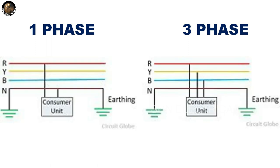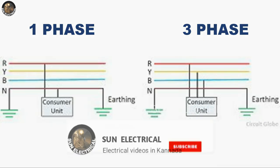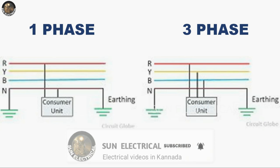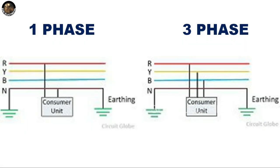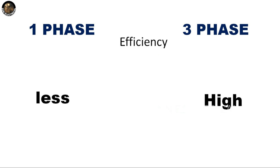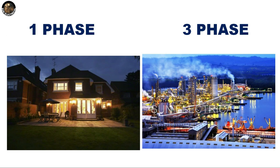Single-phase power systems are used by consumers at home. 3-phase power systems are used in buildings and large industries and factories. The efficiency of the 3-phase system is much better. Large industries use the 3-phase system.